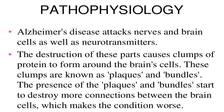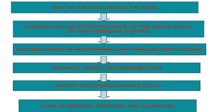The pathophysiology of Alzheimer's is that it attacks the nerves, brain cells, and neurotransmitters. Destruction of these parts causes clumps of protein to form around the brain cells — these are known as plaques and tangles, which start to destroy more connections between brain cells, worsening the condition. Due to the etiological factors, changes occur in the proteins of the nerve cells of the cerebral cortex, leading to accumulation of neurofibrillary tangles and plaques, granulovacuolar degeneration, loss of cholinergic nerve cells, and ultimately loss of memory function and cognition.